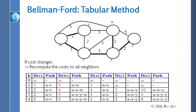For four hops, we look at nodes three hops away — which is Z — and see if we can reach anywhere faster. From Z, we can reach X, W, and Y, but the costs don't decrease, so we are done. The algorithm terminates, and the table now shows the final path costs and paths to every node.